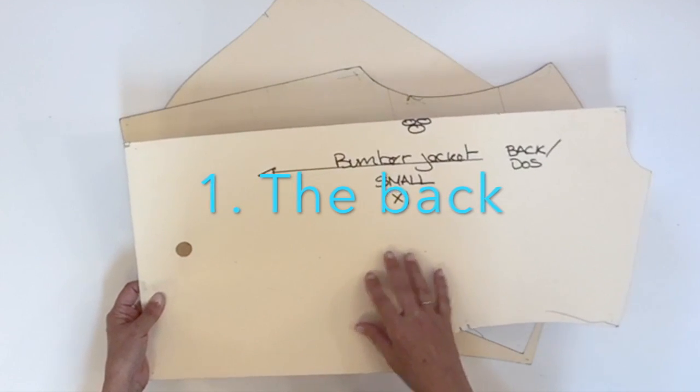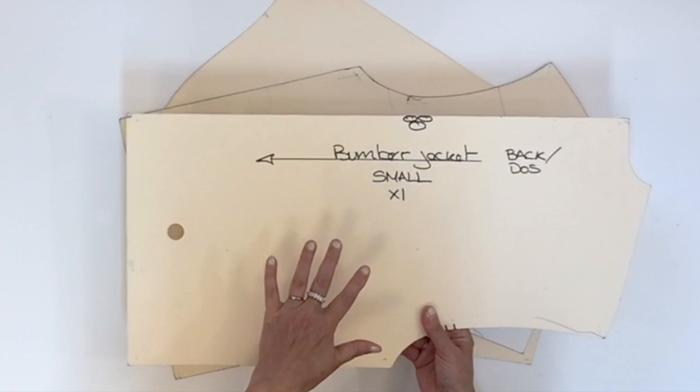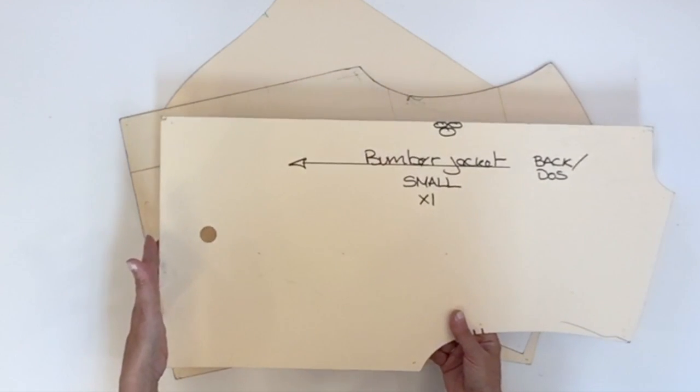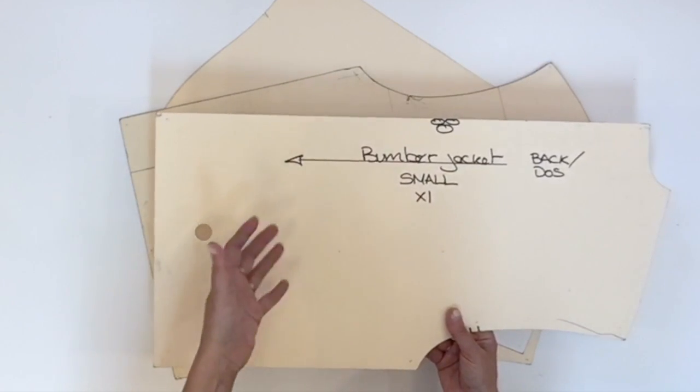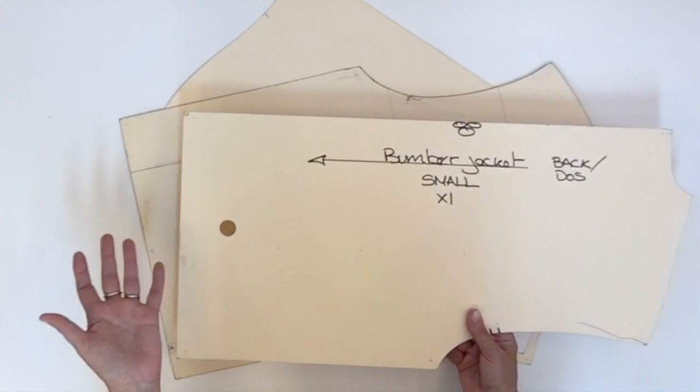You have the first pattern piece that is the back. It's cut on fold. Right now it's a bomber jacket, a short jacket with ribbing at the waist, but you could also elongate it straight and have a long coat pattern.